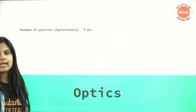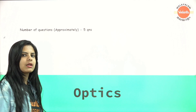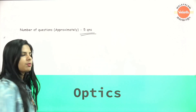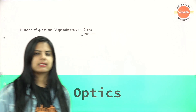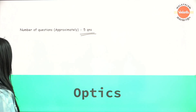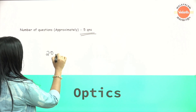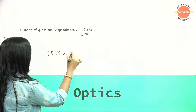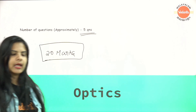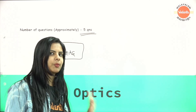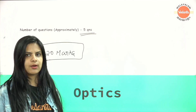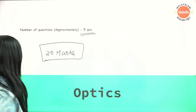Next topic is Optics. Optics includes ray optics and wave optics — that is 5 into 4, giving 20 marks. We need to cover both these chapters, and all of this ratio is maintained across the question paper.